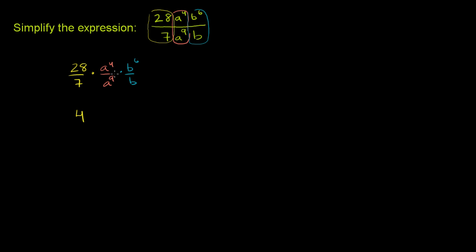Then we have the a to the fourth divided by a to the ninth. And when you have an exponent in the denominator, you can subtract it from the exponent in the numerator. We have the same base, a. That's why I grouped it this way. So this is going to be equal to a to the 4 minus 9 power. What's 4 minus 9? It's negative 5. 4a to the negative 5.